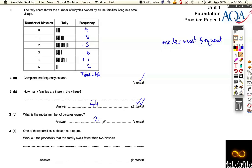So more families own 2 bicycles than any others, and one of these families is chosen at random, so there's 44 families, they're all chosen, and one of them is chosen from all of them at random. Work out the probability that this family owns fewer than 2 bicycles.